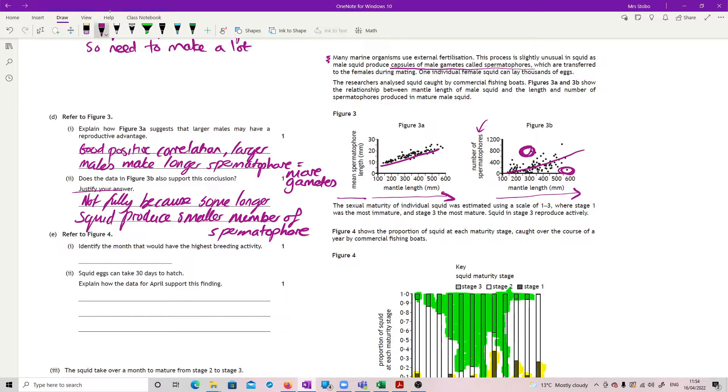Because some longer squid produce smaller numbers of spermatophores. Or you could go the other way, that you have some of the smaller ones are producing larger numbers of spermatophores. Therefore, that'll kind of even out. You could also go the other way, and I think, you know, and you look at the mark scheme, it'll allow you both. So you could go yes, and you could say that you've got a weak correlation there. I mean, it is there, I think, but it's not great.